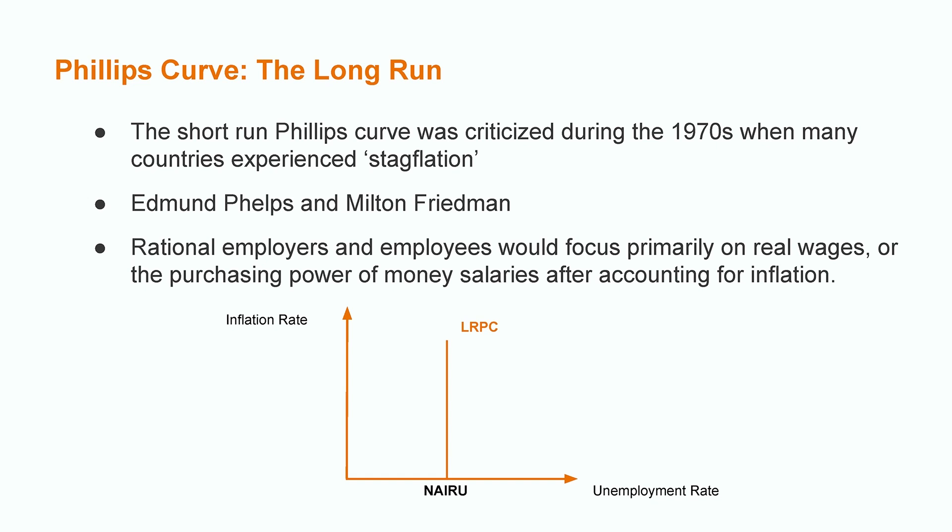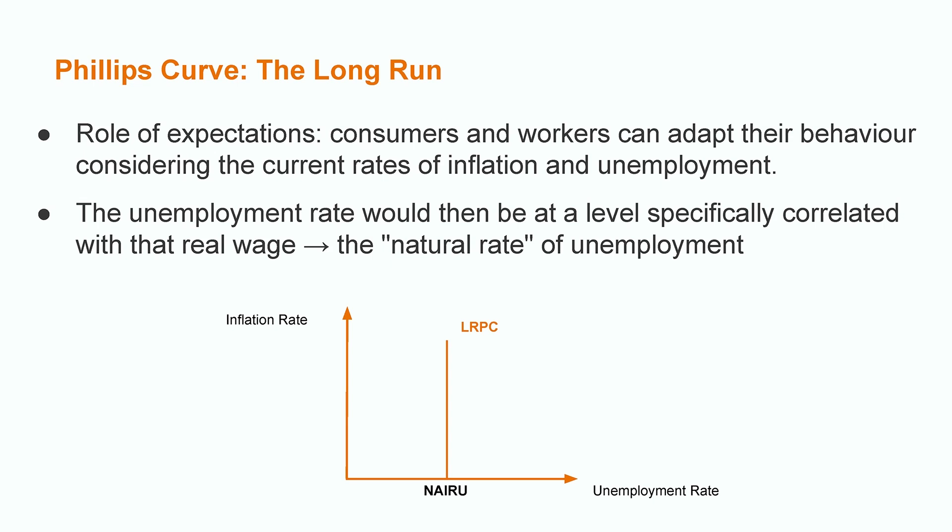They stated that rational employers and employees would focus primarily on real wages, or the purchasing power of money and salaries after accounting for inflation. In other words, when workers expect prices to rise, they start demanding higher wages in order to mitigate the impact of inflation. This turns into a spiral since higher wages imply higher costs to employers, who eventually increase their prices and make workers ask for even higher wages — and this goes on and on. This generated a separate analysis by incorporation of the role of expectations, based on the fact that consumers and workers can adapt their behavior considering the current rates of inflation and unemployment.